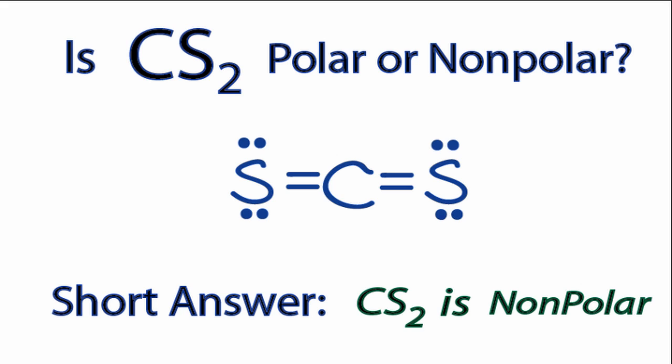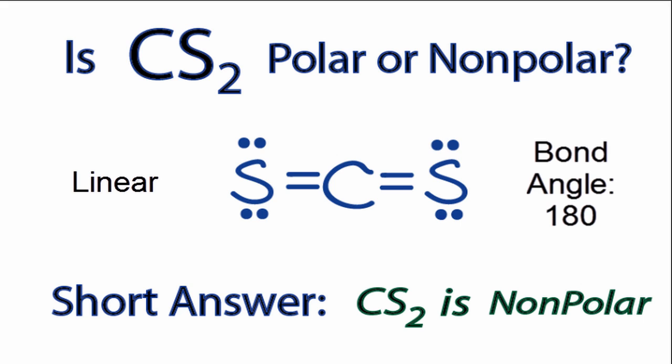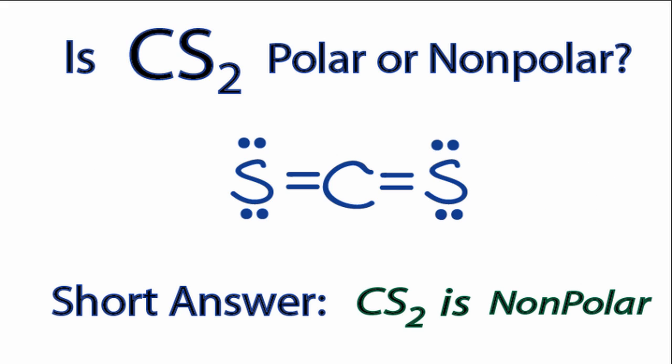We can determine from the Lewis structure that this is a linear molecule. All the atoms are in a line and the bond angle is 180 degrees. We also can see that it's symmetrical — the sulfur on the left side is the same in terms of its configuration as the sulfur on the right side.